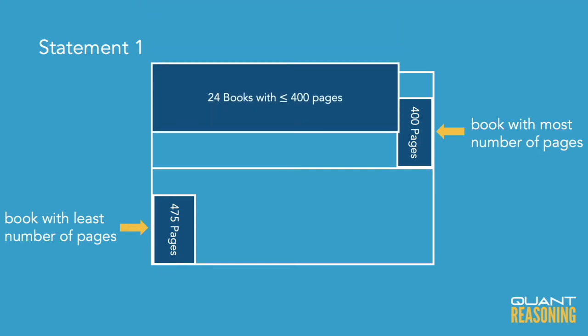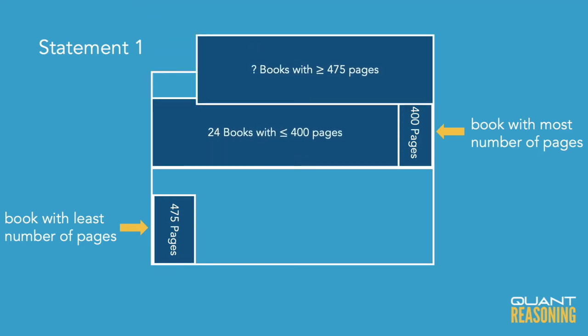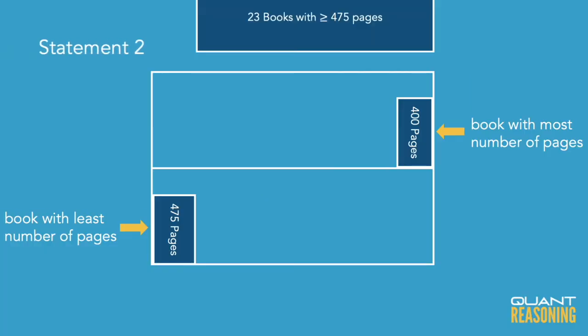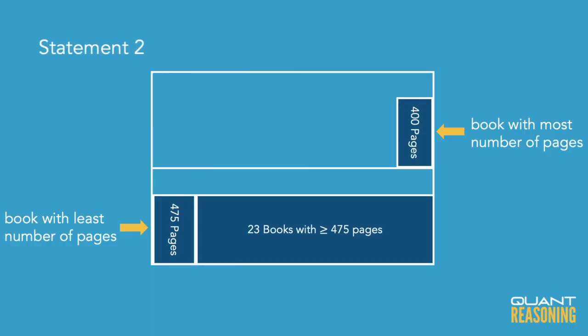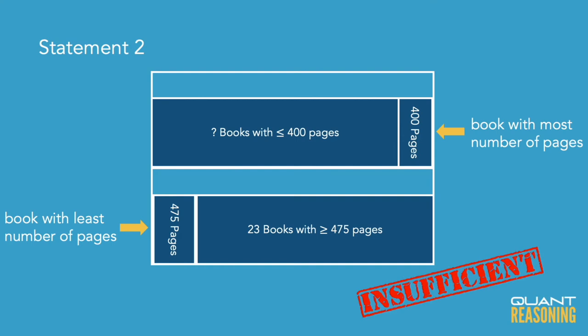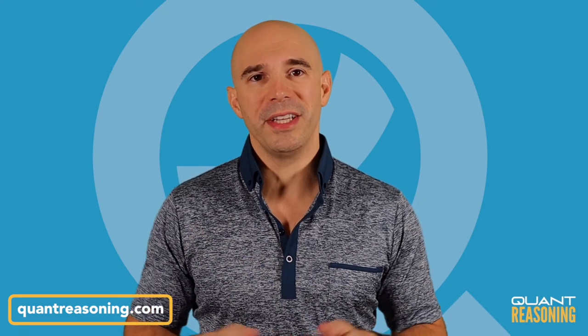Each statement on its own just gives us the number of books on a single shelf, but without knowing how many books there are altogether or how many books there are in the other shelf, this couldn't possibly be sufficient to answer the question. So we should probably go ahead and eliminate A, B, and D, and just figure out whether the answer is C or E.